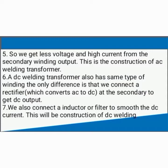Sixth, a DC welding transformer also has the same type of winding. The only difference is that we connect a rectifier at the secondary to get DC output. Seventh, we also connect an inductor or filter to smooth the DC current. This is the construction of a DC welding transformer.